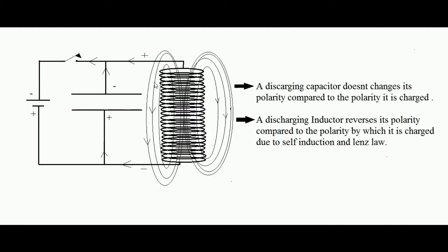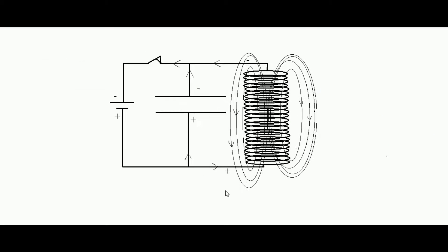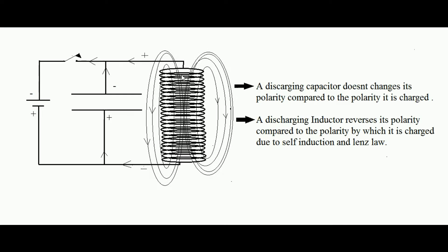When the inductor's field is collapsing, its polarity reverses — a discharging inductor reverses its polarity compared to the polarity by which it was charged. The reason is self-induction and Lenz's law. So the inductor now has a reversed polarity compared to the capacitor.